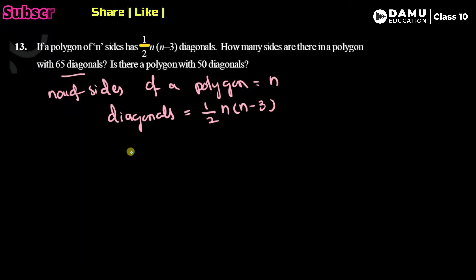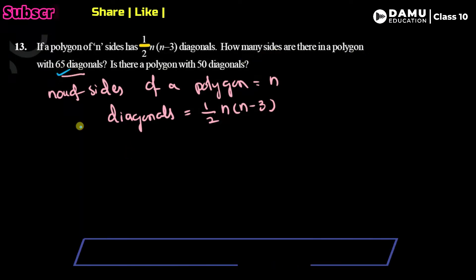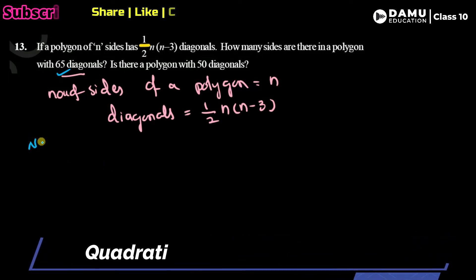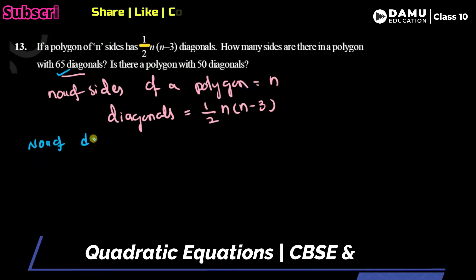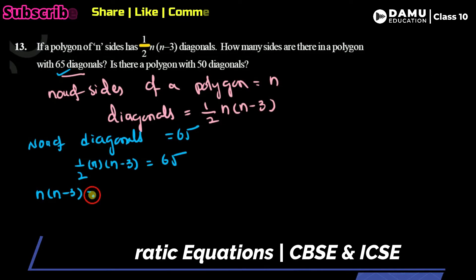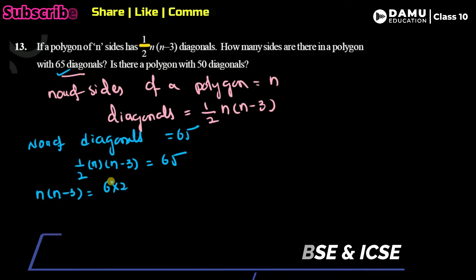Now, given that the number of diagonals is 65, we set up: (1/2) × n × (n − 3) = 65.